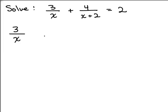3 over x, and I'm going to leave a little space. We've got 4 over x plus 2, and I'm going to leave a little space and write 2. So here's the original problem. And I look at this and think, what would the least common denominator be? Remember 2 would be written as 2 over 1. The least common denominator is x times x plus 2.